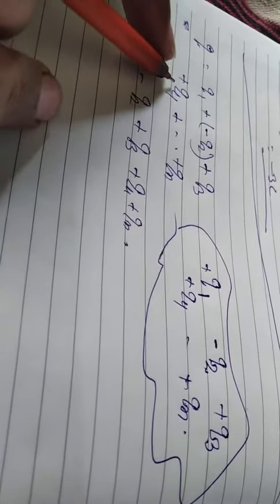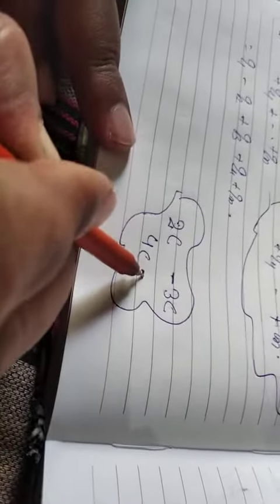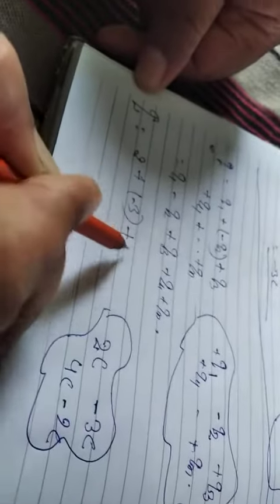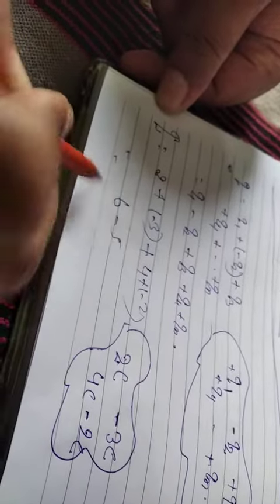Let us see an example. Suppose an object contains different charges of 2 coulomb, minus 3 coulomb, 4 coulomb, minus 2 coulomb. Then net charge equals 2 plus minus 3 plus 4 plus minus 2. It means 6 minus 5, which equals 1 coulomb. This is called additive nature of charge.